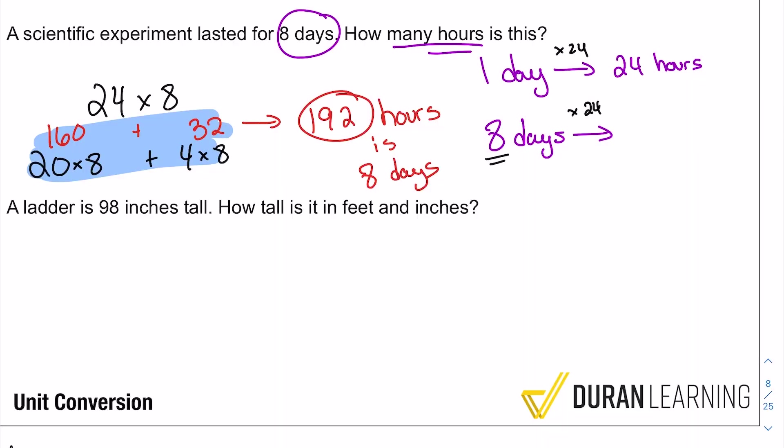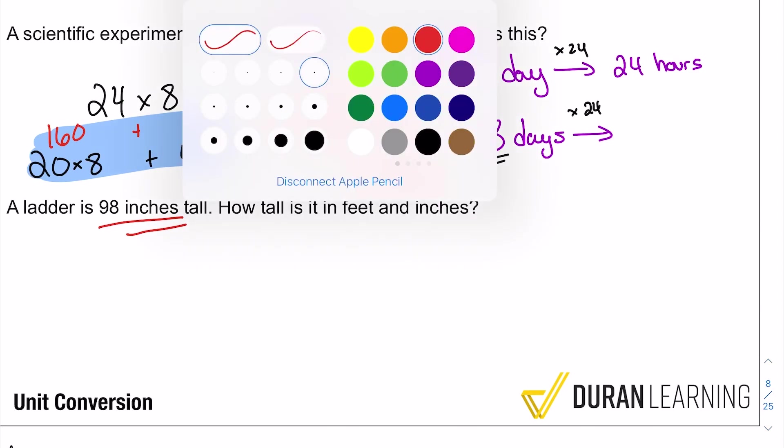So let's move on to number two. A ladder is 98 inches tall. How tall is it in feet and inches? Interesting problem here, right? Because we have a total of 98 inches and we want to get that down to feet and inches. So again, it's about conversions.